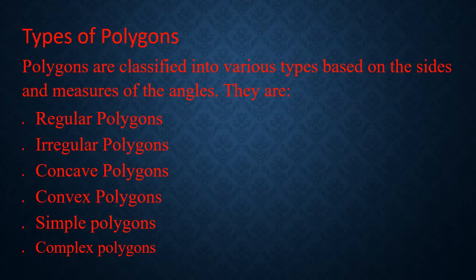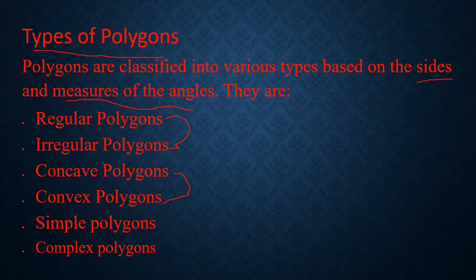Now let us study about the types of polygons. Polygons are classified into various types based on the size and measures of the angles. They are: regular polygon and irregular polygon; concave polygon and convex polygon; and simple polygon and complex polygon — these are the major three types of polygons. Let us explore about these types one by one.